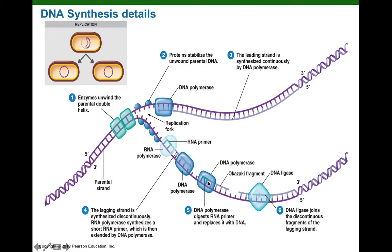You might think that solves all our problems, but the problem is that on the lagging strand we now have all these little DNA fragments called Okazaki fragments. DNA polymerase 1 can't link the end of the DNA it has synthesized to the DNA right in front of it. These DNA fragments are called Okazaki fragments.